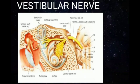First let us learn in detail about the vestibular nerve. The vestibular nerve carries sensation of positions and movements of the head from the maculae of the utricle and saccule, and the cristae ampullaris in the semicircular ducts. These organs are located in the internal ear.